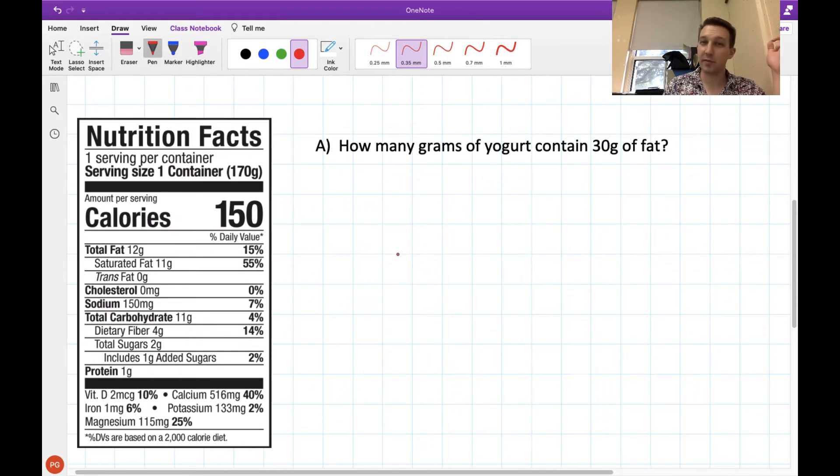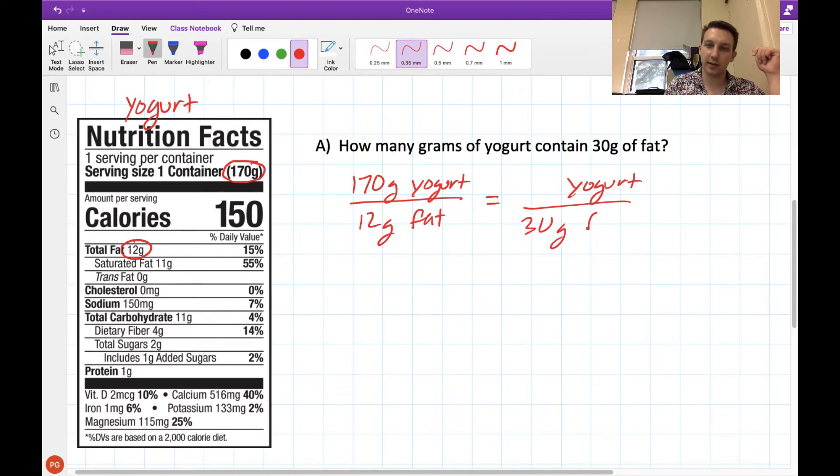Another place where this proportional reasoning could be really helpful is when we look at nutritional information on the back of any sort of container. So this was something that I looked up online for a certain type of yogurt. The first question we want to ask here is how many grams of yogurt contain 30 grams of fat? Based on what we see here, one serving size container, which is 170 grams, contains 12 grams of fat. Now we want to know what volume of yogurt would give us 30 grams of fat.